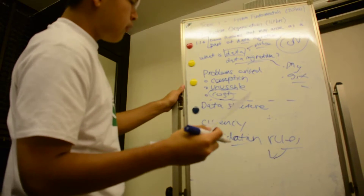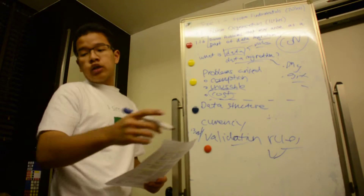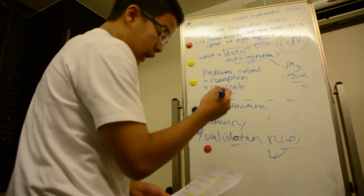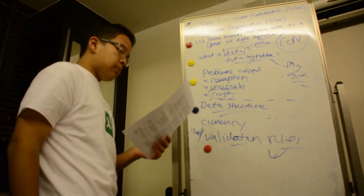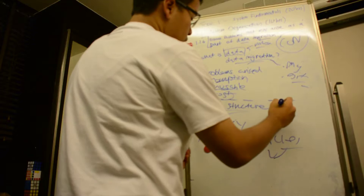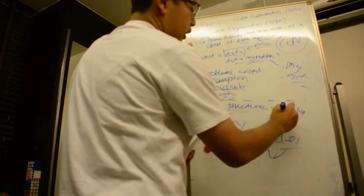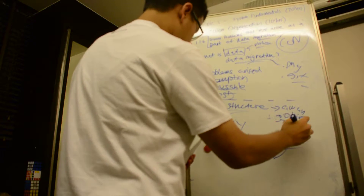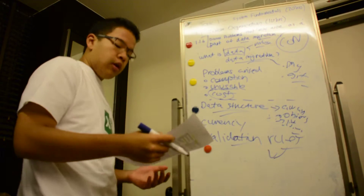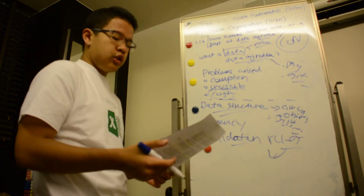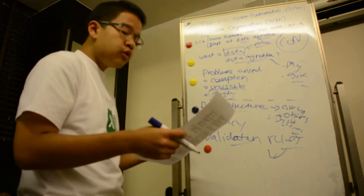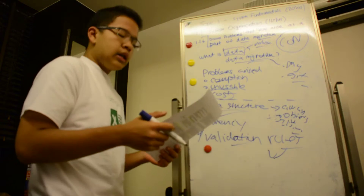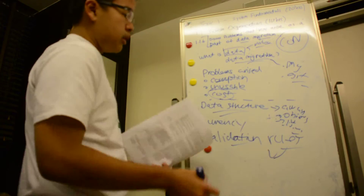Furthermore, there are lots of other things that might contribute to incompatibility, such as data structure. Data structure refers to the collection of data — such as arrays, objects, lists, and files. New software might organize data into different structures than older software. For example, a 2D array used in an older Java program might be replaced by a new SQL database table in a new system.